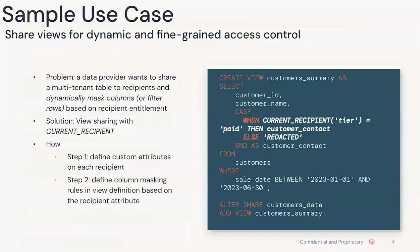Here's a concrete example. Imagine a data provider who wants to share a multi-tenant customer table but needs to mask sensitive columns, like customer contact, based on the recipient's tier — for example, paid versus free. With view sharing, this becomes straightforward. The provider creates a view called customer summary. Within this view, the customer contact column is conditionally redacted using the case statement and the current recipient function. If the recipient has a tier property set to paid, they see the actual contact information; otherwise, it's redacted.